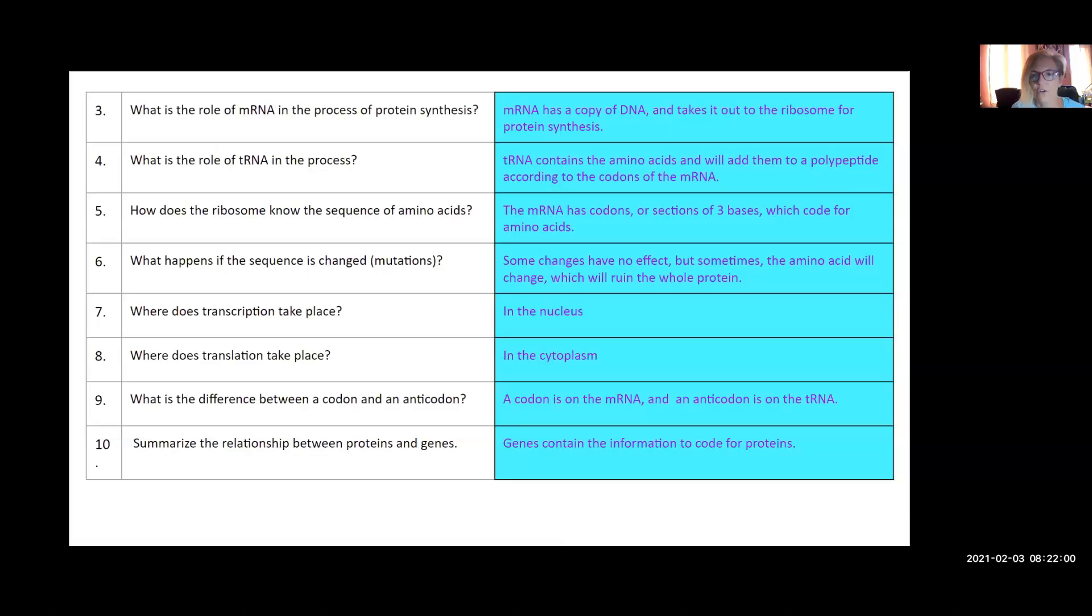Where does transcription take place? The nucleus. Translation? Cytoplasm. The difference between the codon and the anticodon? They're complementary. The codon codes for the amino acid; the anti carries the amino acid—it doesn't code for it. So you read a code; it wouldn't make sense to read an anti-code. They are complementary, meaning they're going to have the opposite nucleotides. The relationship between proteins and genes? Genes carry the information for proteins. Genes code for proteins. Proteins create your phenotypes. Proteins are expressed.